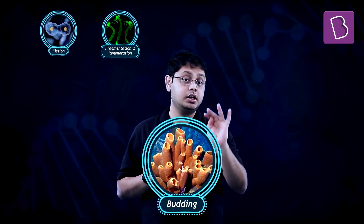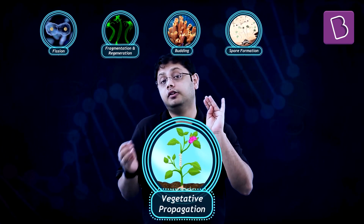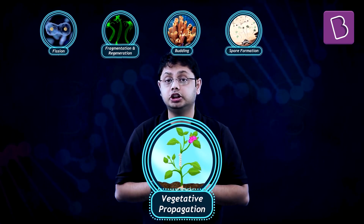A few organisms don't take the trouble to actually go and find somebody else to reproduce. They say, I am self-sufficient, I don't need anybody for help, I can do it all by myself, and hence undergo asexual reproduction. Principally, there are five kinds of asexual reproduction that you've got to learn: fission, fragmentation and regeneration, budding, spore formation, and as seen in a few plants, vegetative propagation.